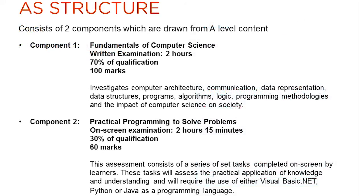The new EDUCAS AS Computer Science is a free-standing but co-teachable qualification. The structure consists of two components. Component 1, Fundamentals of Computer Science, is marked out of 100 and is weighted at 70% of the qualification. It is assessed in a constrained examination booklet with a duration of two hours. Component 2, Practical Programming to Solve Problems, consists of a series of tasks completed on screen and will assess the practical application of knowledge and understanding. Component 2 will require learners to utilise one of three programming languages for some questions. It is marked out of 60 marks, has a weight of 30% of the AS qualification, and a duration of 2 hours and 15 minutes.